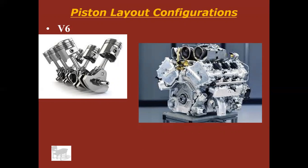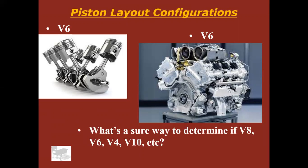Of course you can't say V8 without V6 — same thing, just six cylinders instead of eight, arranged in a V format. How can we tell whether an engine is a V8, V4, V10, V12, or V16? The quickest, easiest — probably the most idiot-proof method — is to count the spark plugs, spark plug wires, or coil packs. Notice one, two, three coil packs times two makes six — so that's a V6.